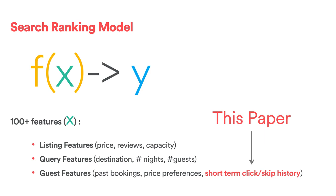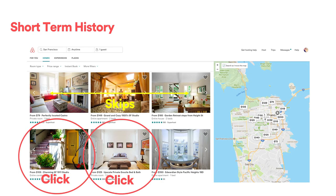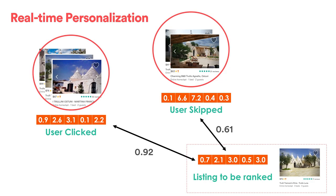In this paper we present our recent work of adding new real-time personalization features to the ranking model, which are based on short-term user history. As the user proceeds with their search, we log the short-term history: clicks on listings and skips — highly ranked listings that were ignored in favor of clicking a lower-position listing. We then use the similarity between listings the user clicked and skipped, and the candidate listings to be ranked, to rank higher listings similar to ones you clicked, and rank lower listings similar to ones you skipped.